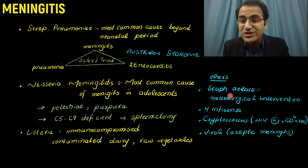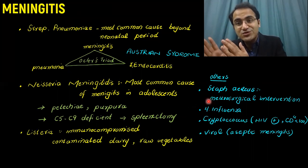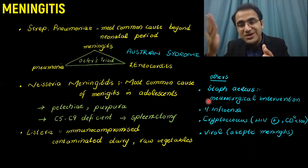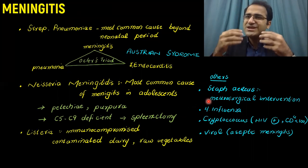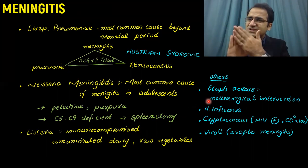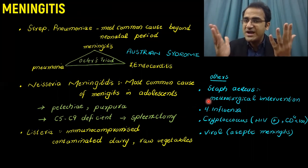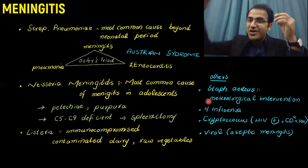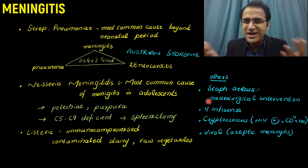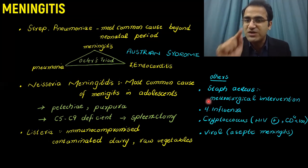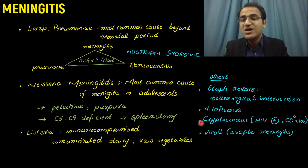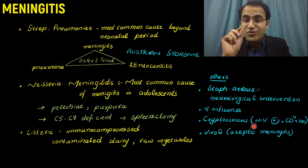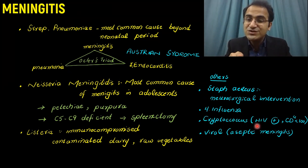Staph aureus is the cause in patients who had a recent neurosurgical procedure or shunt placement, since Staph aureus is commonly found on surfaces and hands. Cryptococcus is an important cause in HIV-positive patients with CD4 count less than 100. Viruses can also cause meningitis, which is called aseptic meningitis.